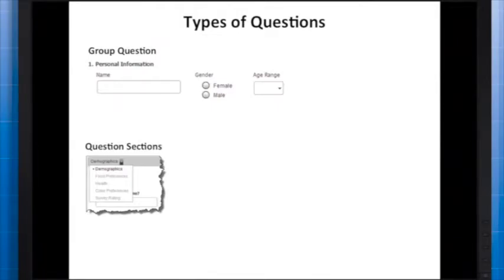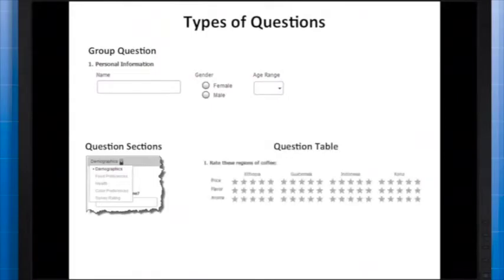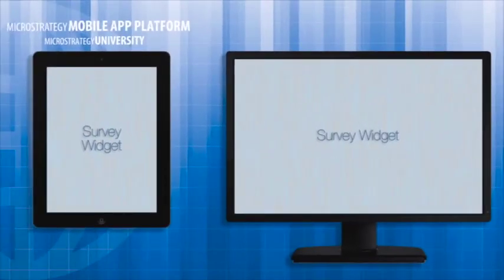For example, you can have demographics questions on one page of your survey, food preference questions on the second page, health information on the third page, and so on. Lastly, you can have a question table — in a question table you display answer options across multiple columns. This is helpful for when you want to rate multiple items such as different coffee bean regions under different categories like flavor and aroma.